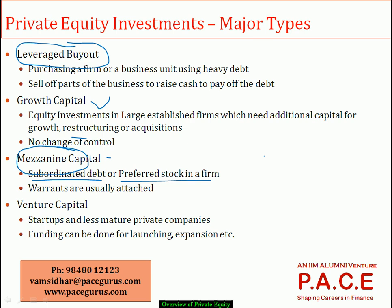PE firms could also enter as preferred stockholders in a firm. Most of the time, warrants are associated with the loans they give — a warrant allows them to convert into equity shares of that firm at a later point for a fixed price set today. So if the firm does well, the PE firm can convert its loan value into equity. The fourth mode is venture capital.